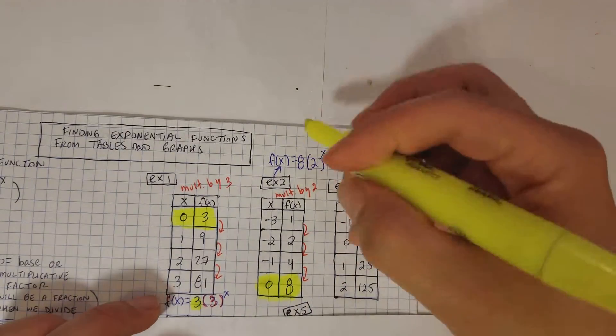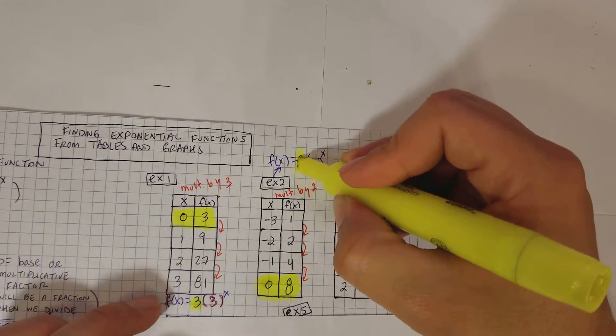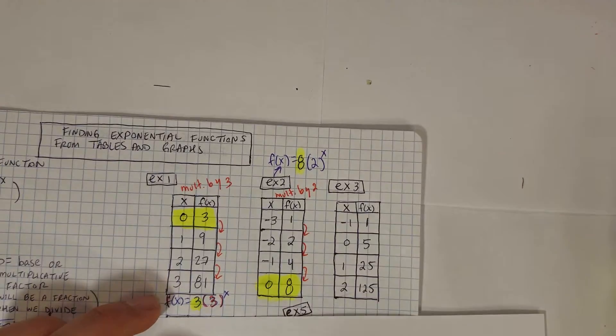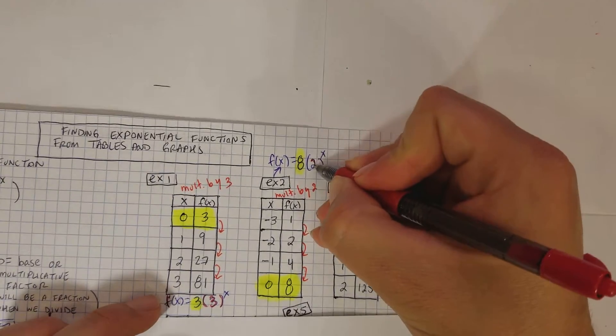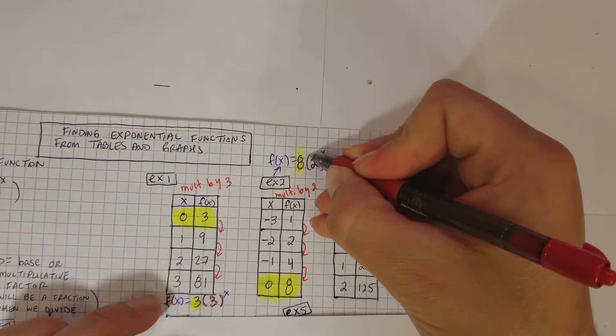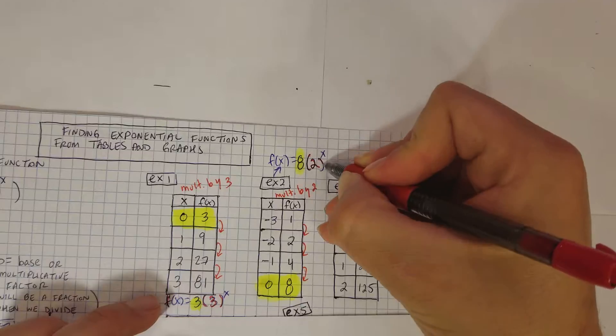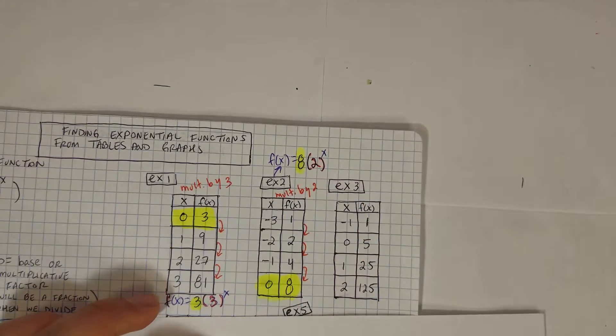The eight came from the y-intercept, and then the two is the number that you're multiplying by each time. So eight times two to the power of x.